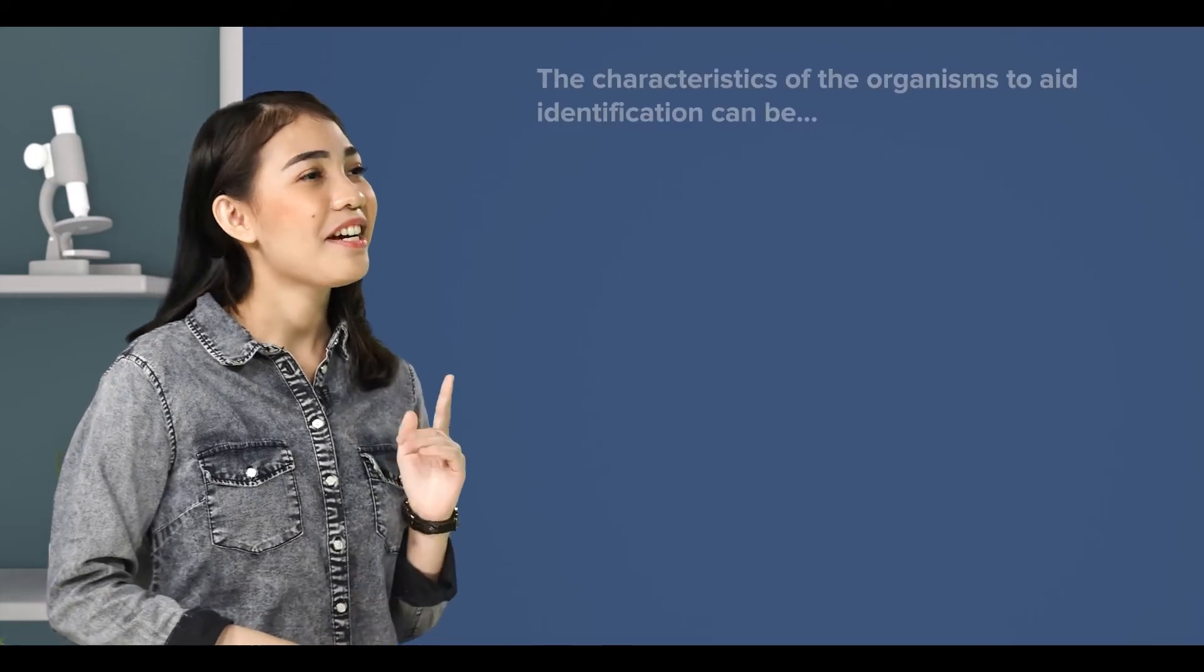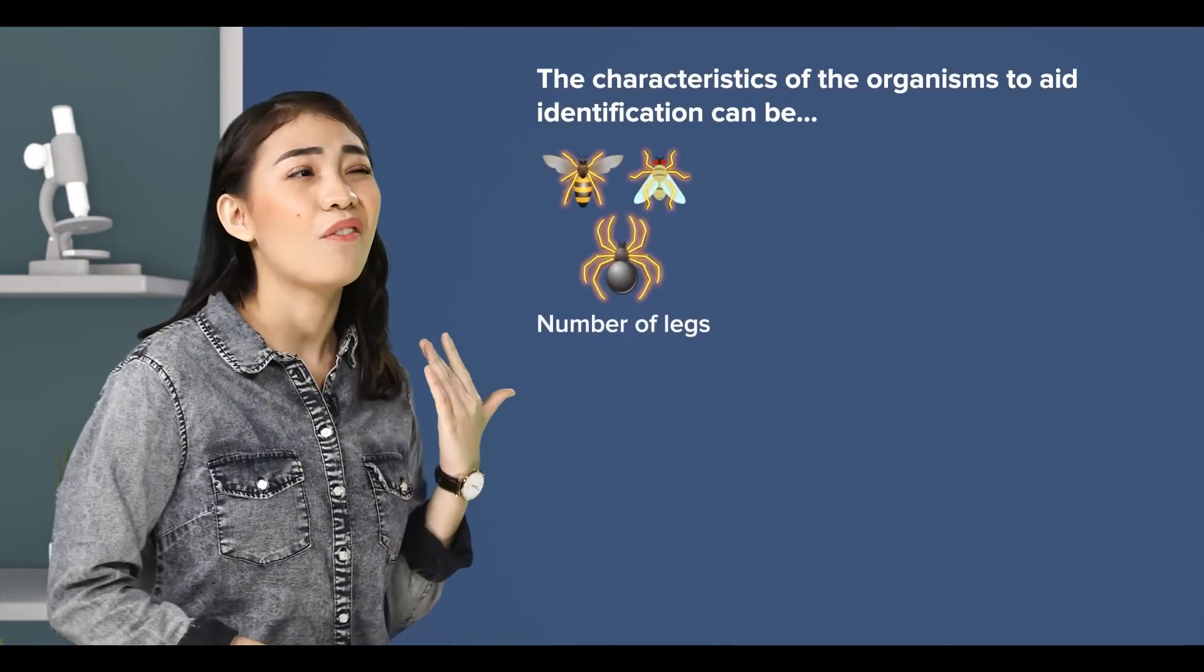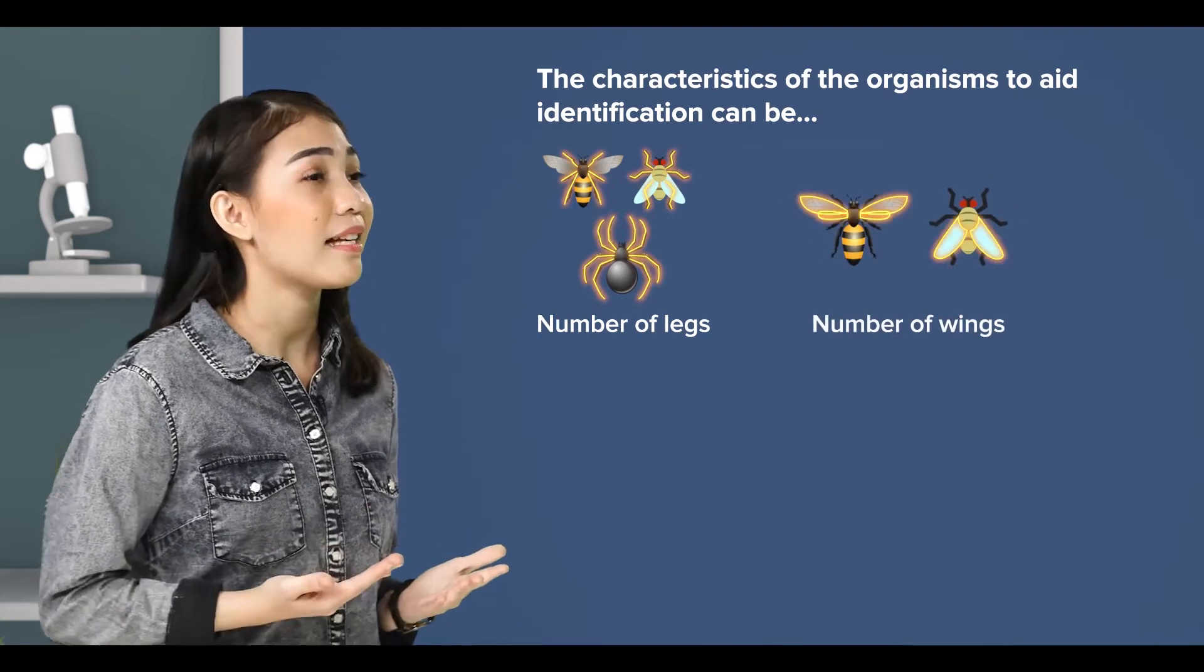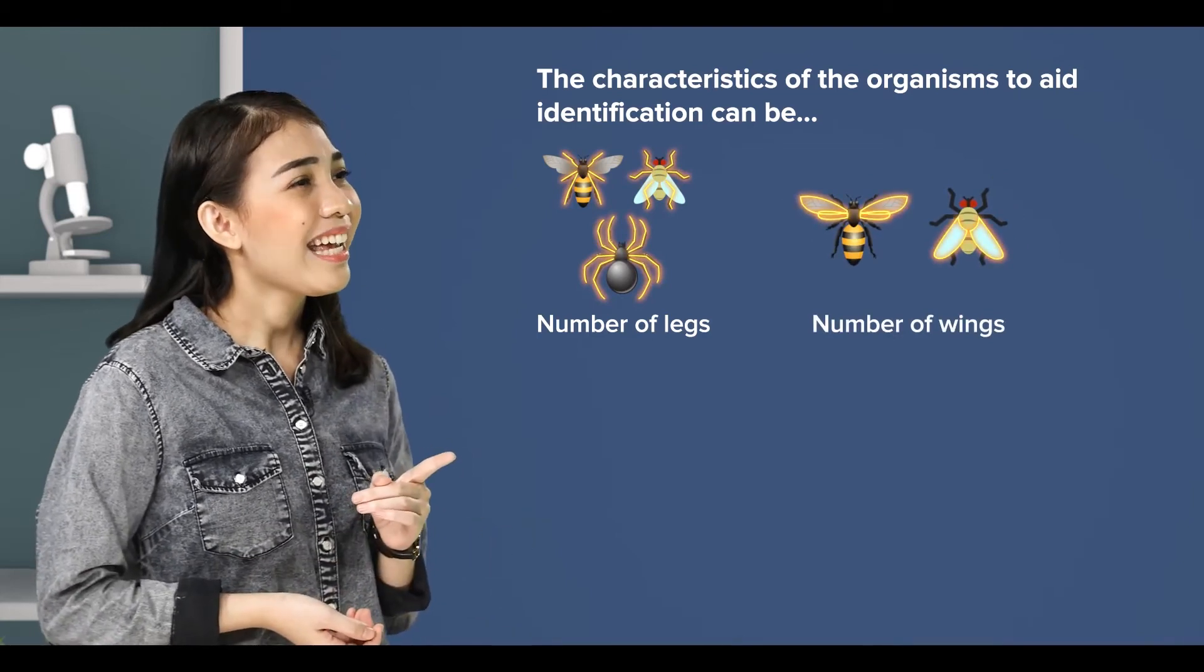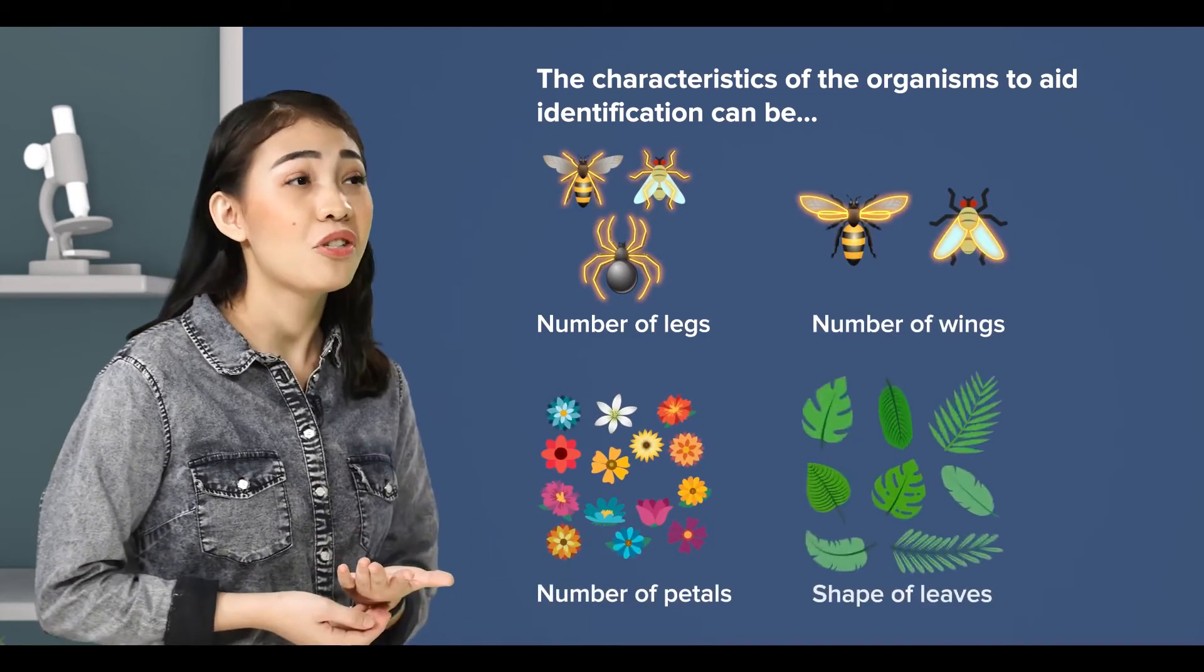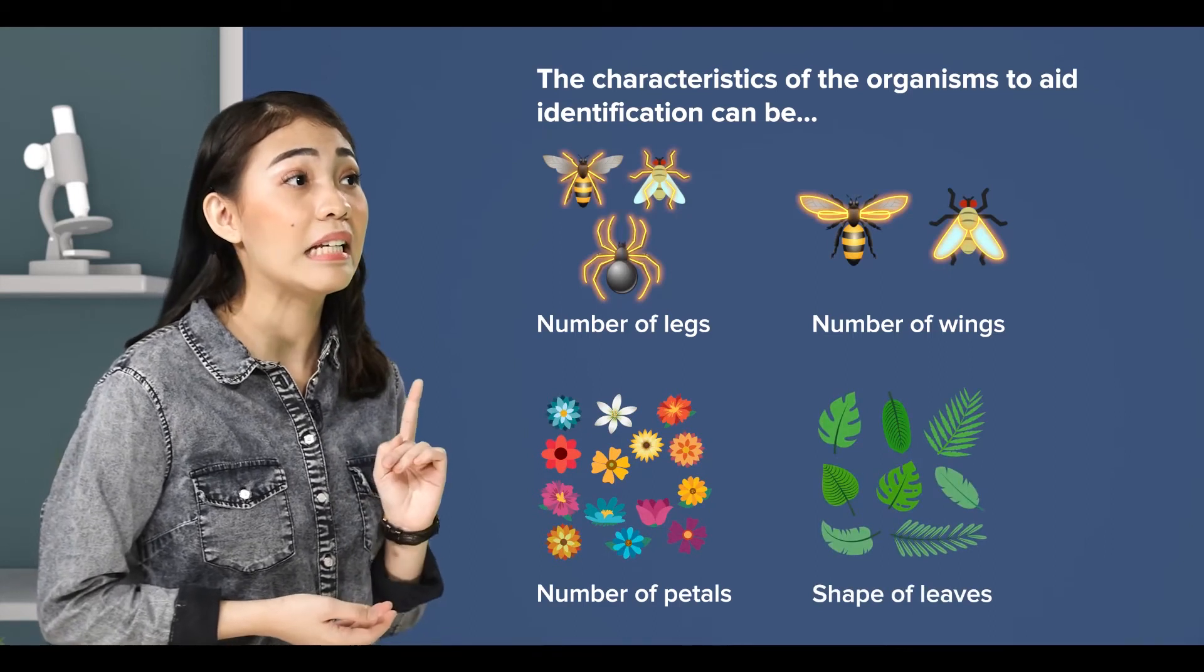Got it, teacher. So, they can be the numbers of legs and the numbers of wings in an animal. Or, can be the numbers of petals or shape of leaves if it is in a plant, right?